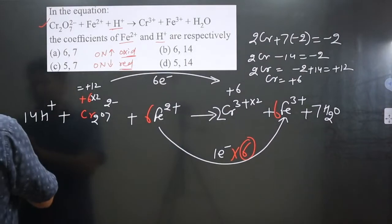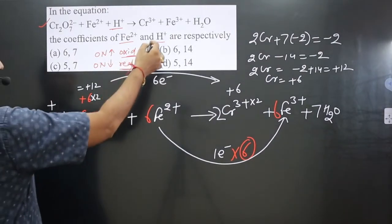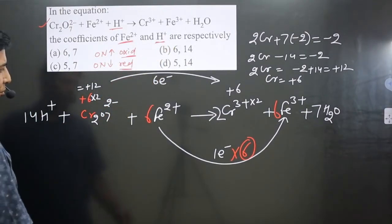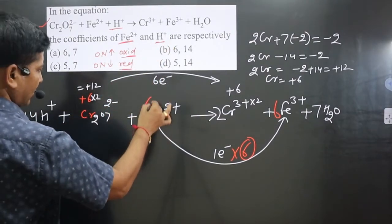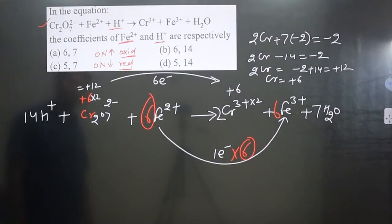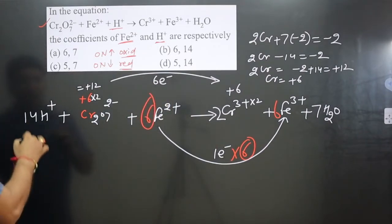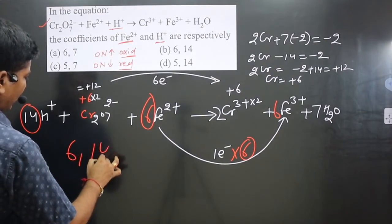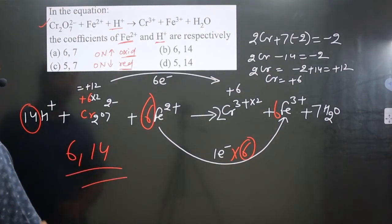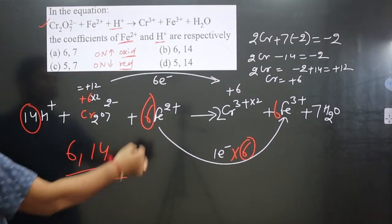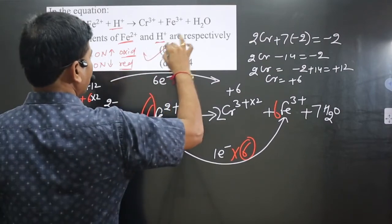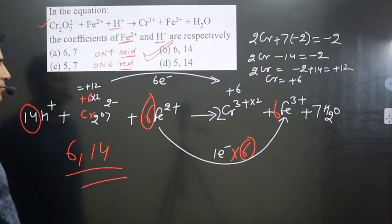Now for Fe2+ and H+, we look at the coefficients. The coefficient of Fe2+ is 6, and the coefficient of H+ is 14. So the answer is 6, 14 — which corresponds to option B. Option B is correct.